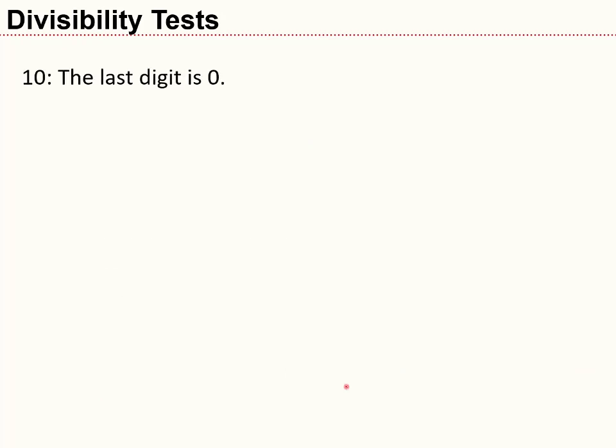Divisibility by 10 is probably the easiest rule of all: if the number ends in 0, the number is divisible by 10.